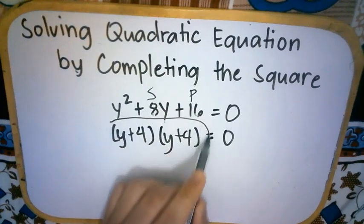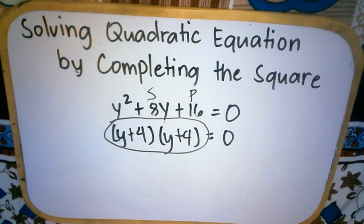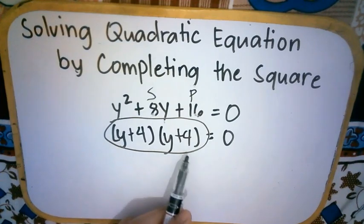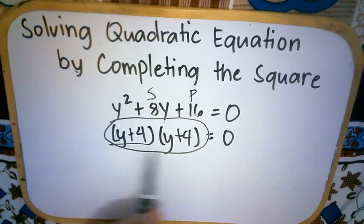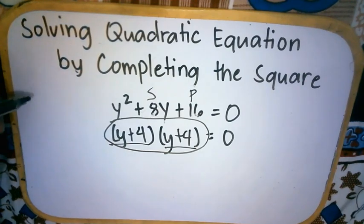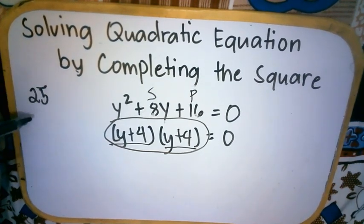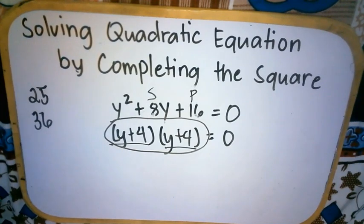Now, look at the result of our factors. Katulad ng binanggit ko kanina, tinawag siyang perfect square dahil ang factor niya ay pareho. Kagaya lang ng mga ibang perfect square numbers like 25, like 36, and the others.